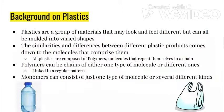Even plastic utensils and plastic grocery bags — so many different things. These are all considered plastics, but they all feel different and have different shapes. The similarities and differences between plastic products comes down to the molecules that comprise them. All plastics are composed of polymers, or molecules that repeat themselves in a chain. Polymers can be chains of either one type of molecule or different ones linked in a regular pattern, and monomers can consist of just one type of molecule or several kinds as well.